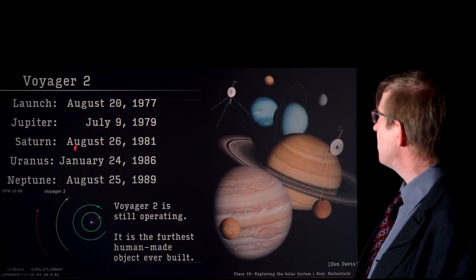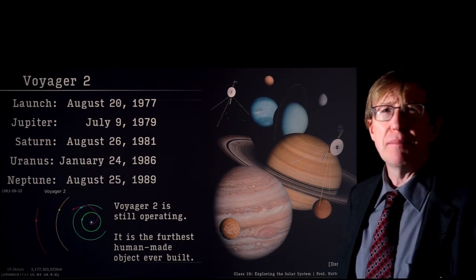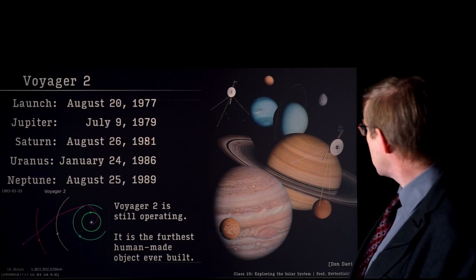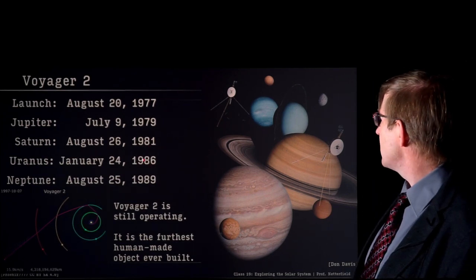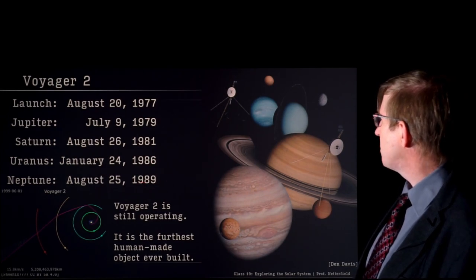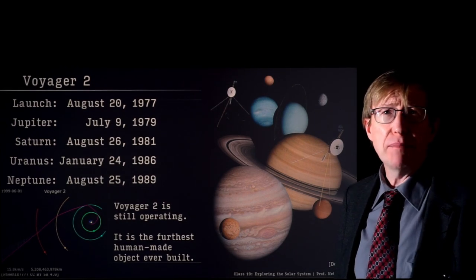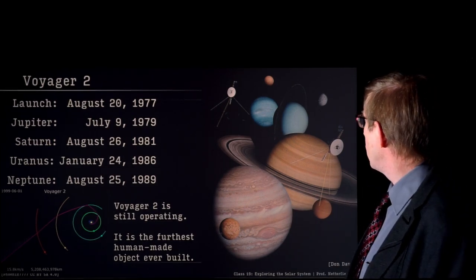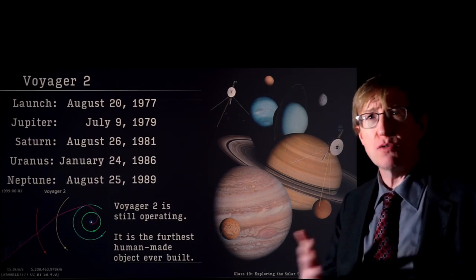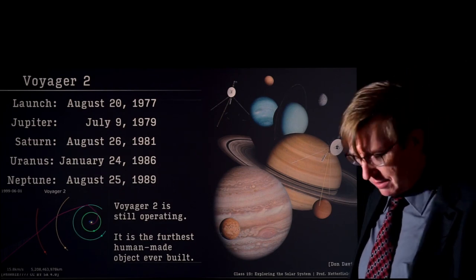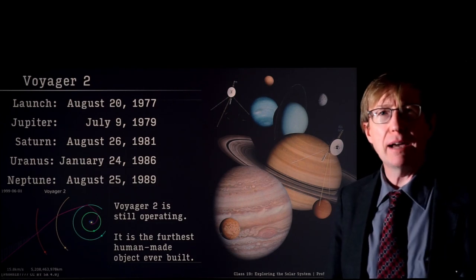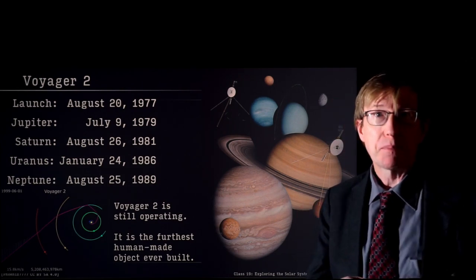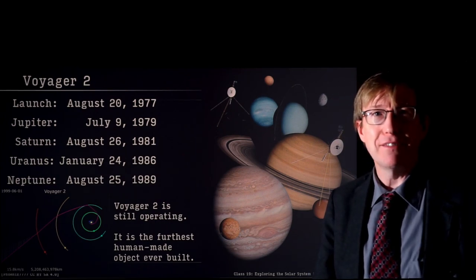Voyager was launched August 20th, 1977. It passed Jupiter a couple years later, using Jupiter to speed up. Then it went past Saturn two years after that, using Saturn to speed up again. Finally it got to Uranus in 1986 — nine years after launch — and 12 years after launch it passed Neptune. Once it passed Neptune, its direction had changed and it was traveling out of the plane of the solar system. These are what we call flyby missions — they fly by their targets taking pictures and measurements as they go, very fast, but you can get incredibly great information in a very short period of time.